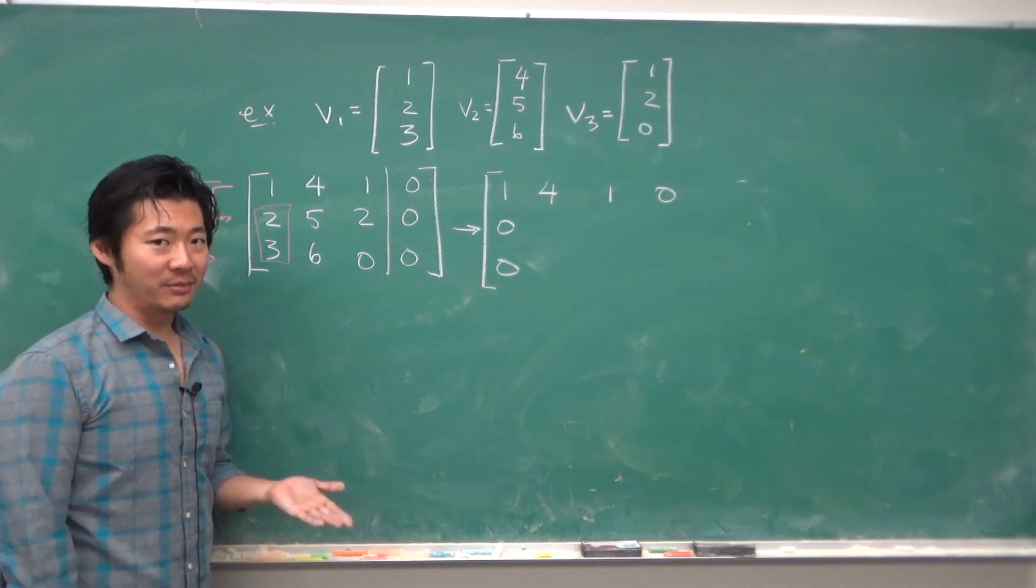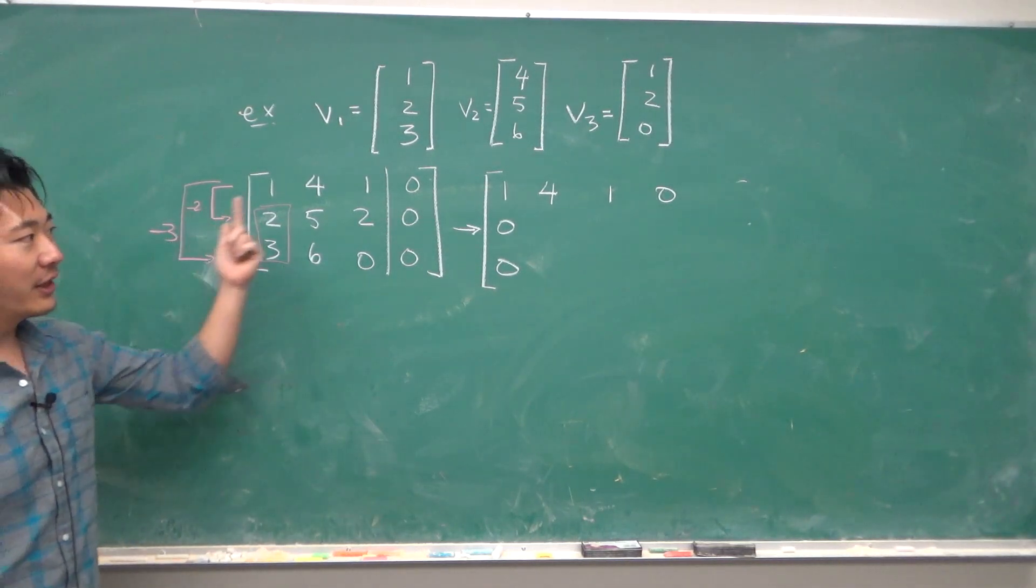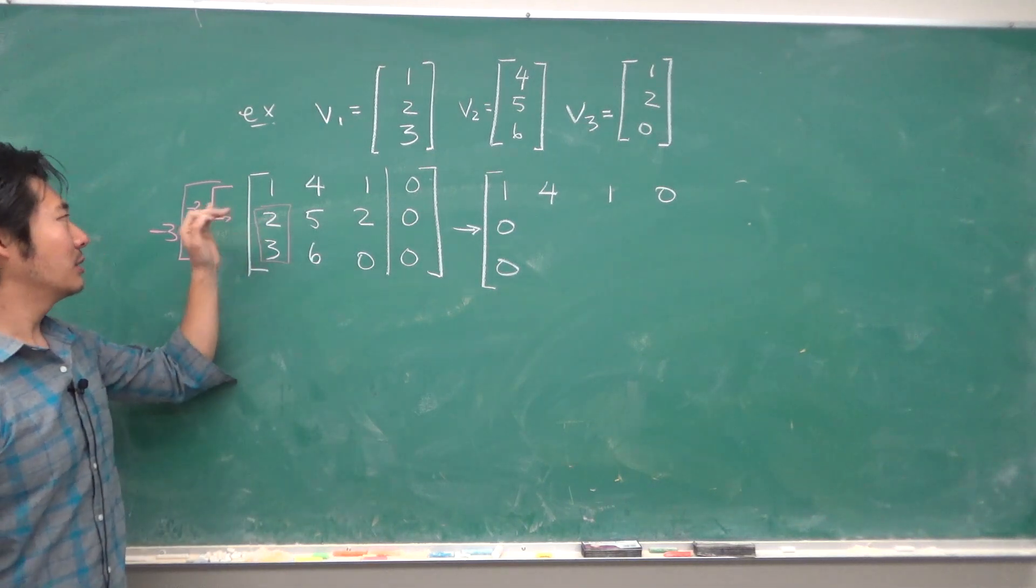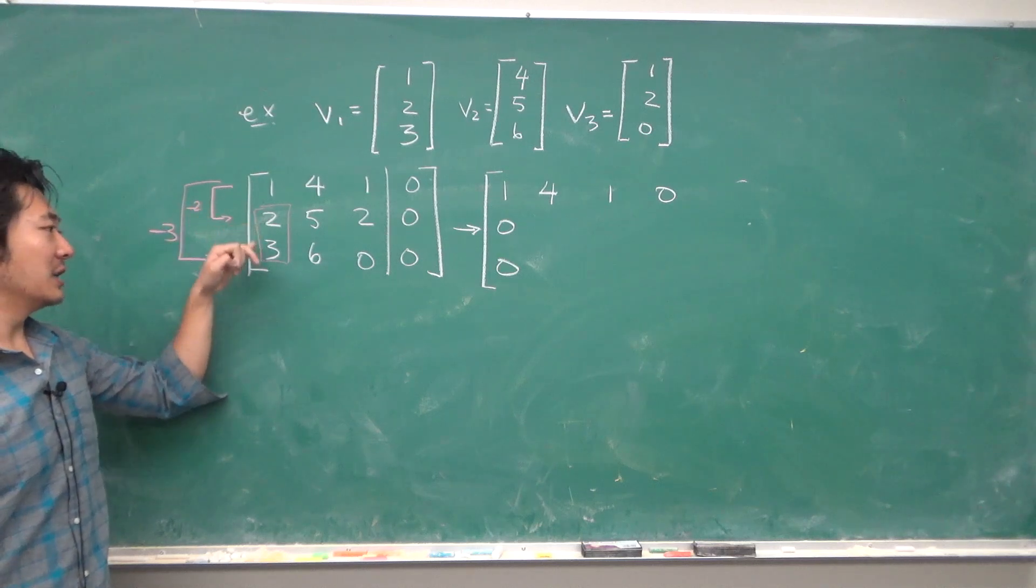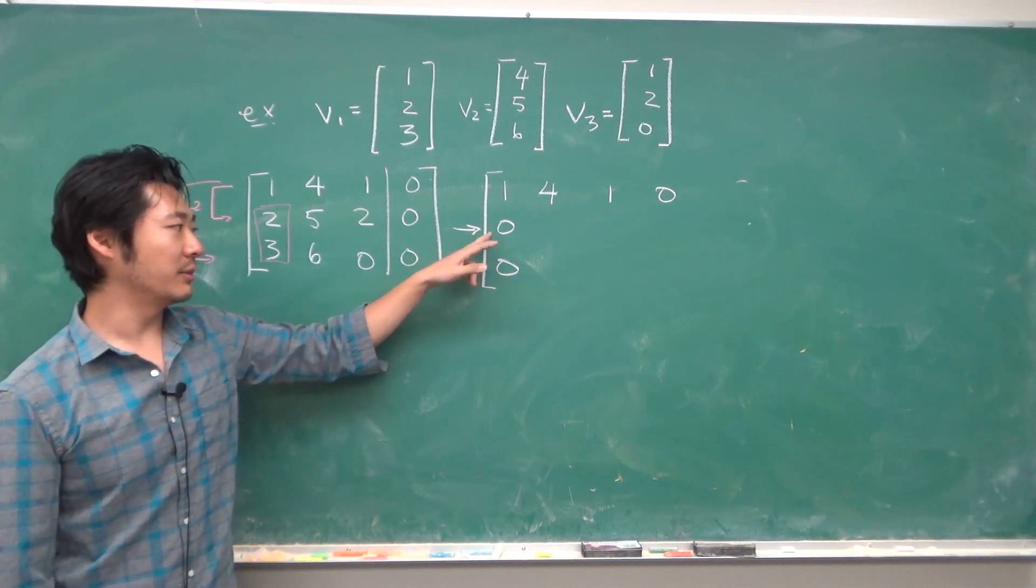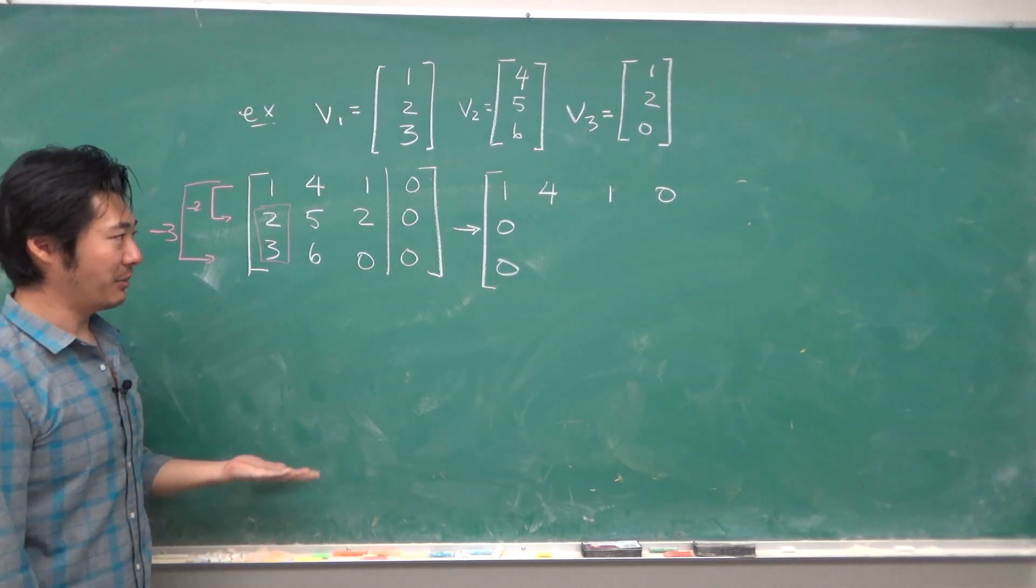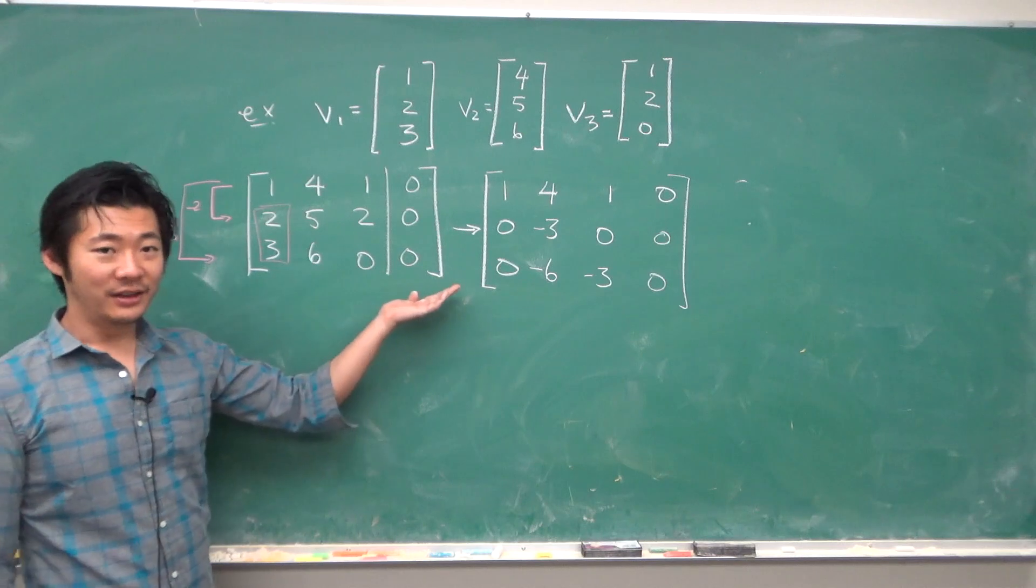You know that these will be 0 without even thinking about anything, so the first step could be this. Now if you think about it, then the next two rows will magically appear.